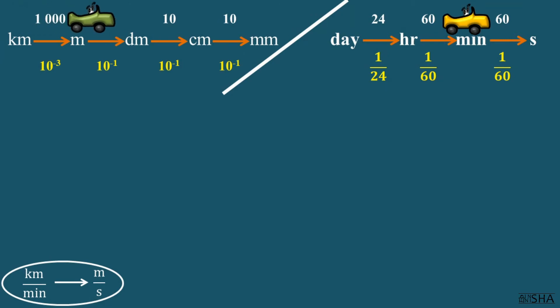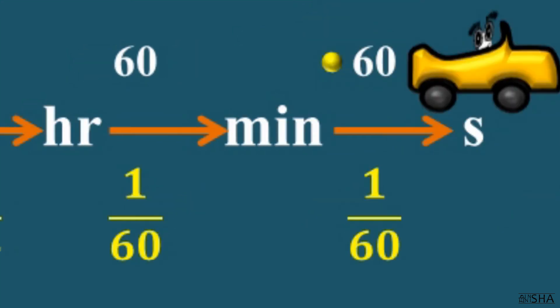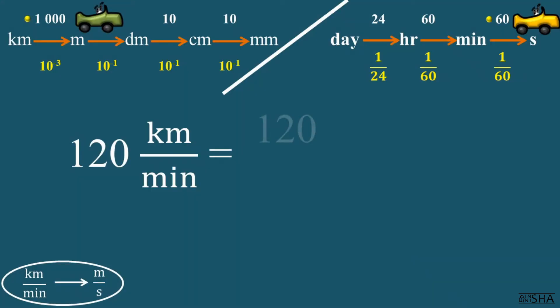Let's convert 120 kilometers per minute to meters per second. In the numerator of the fraction, we need to convert kilometers to meters. And in the denominator, minutes to seconds.